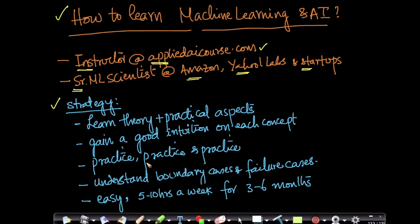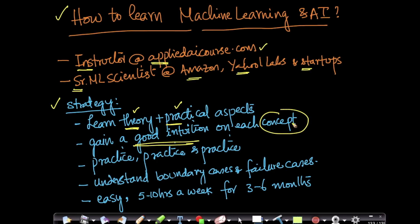The basic strategy to learn machine learning is this: you need to learn both theory and practical aspects. You can't just learn only theory or only some APIs and programming. If you just learn practical aspects without theory, you'll always be lacking. It's important to get a very good intuition on each concept — not just equations, but also to understand each concept intuitively, if needed through geometry.